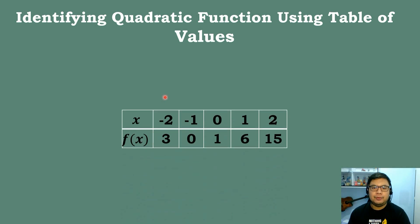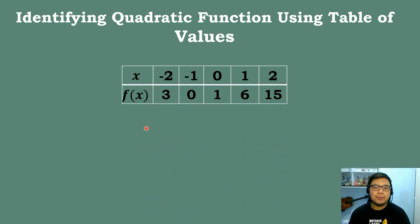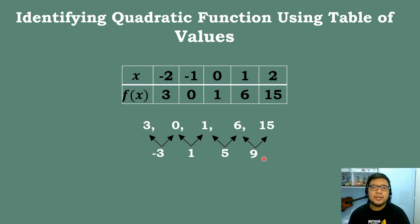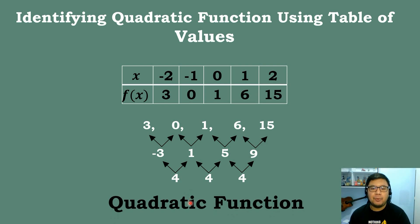Let's solve our next example. We have a given table of values with f(x) values: 3, 0, 1, 6, and 15. We get the first differences: 0−3=−3, 1−0=+1, 6−1=+5, 15−6=+9. The first differences are not equal, so this is not a linear function. Then we get the second differences: 1−(−3)=4, 5−1=4, 9−5=4. Since the second differences are equal, therefore this is an example of a quadratic function.